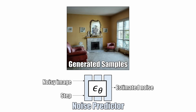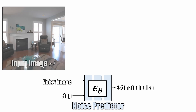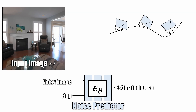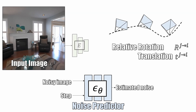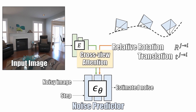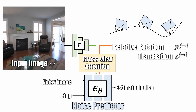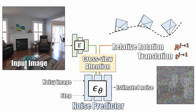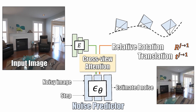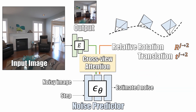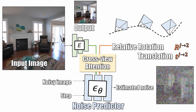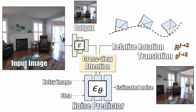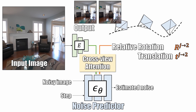But what we really want is a video of a particular scene from a moving camera. To do so, we need to condition our noise predictor with the input image and the relative pose. We use the cross-view attention layer for capturing this association. Now we can use the model to generate the first new frame. By changing the relative rotation and translation, we can generate another new frame. We repeat this process until all the frames are generated.